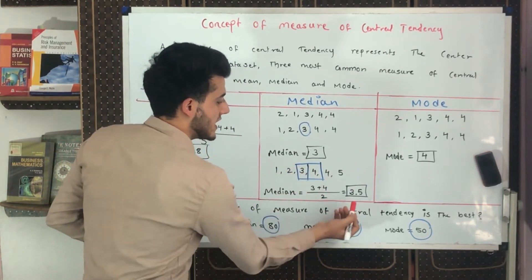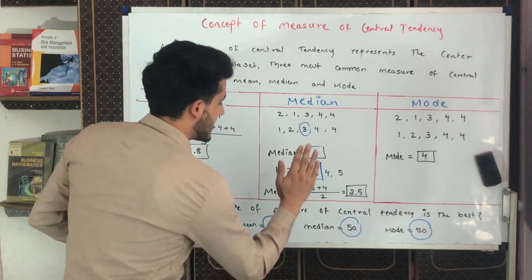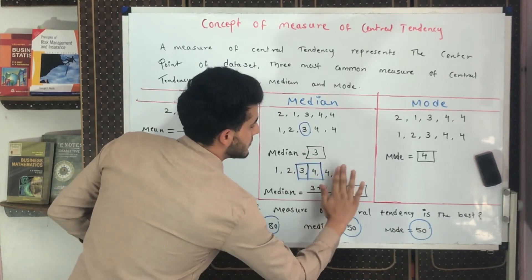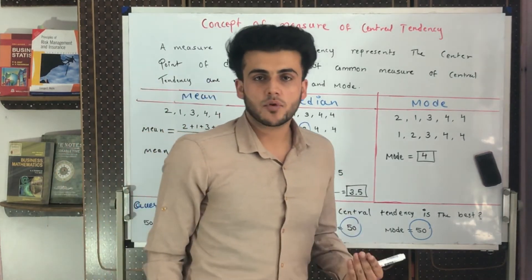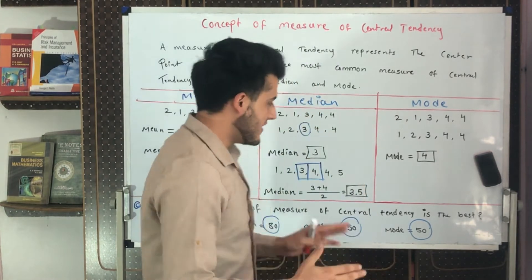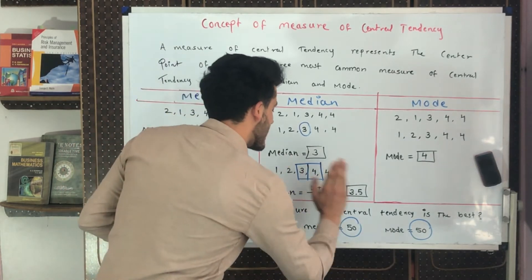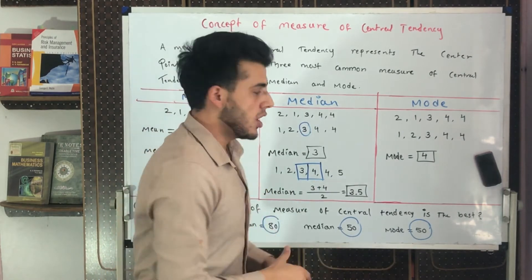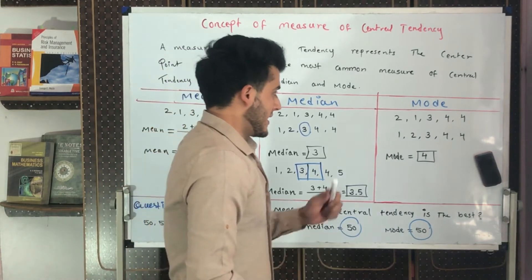Since two numbers remain on the right and two on the left, we take the average of those two middle numbers. Three plus four divided by two equals 3.5. If we only took three, then three numbers would be left on one side and two on the other, which creates an imbalance. So taking the mean of the two middle numbers, we find a median of 3.5.